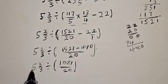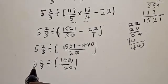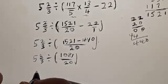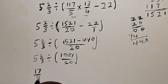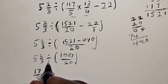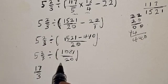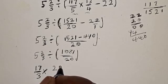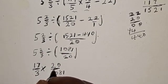We are through with what is in the bracket. Now outside the bracket there is division. We convert 5 and 2/3: 3 times 5 = 15 plus 2 = 17 over 3. We want to change the division sign to multiplication, so we take the reciprocal of 1081 over 20, making it 20 over 1081.